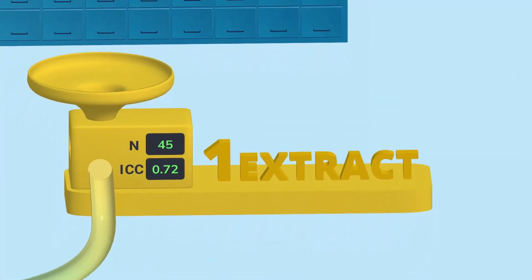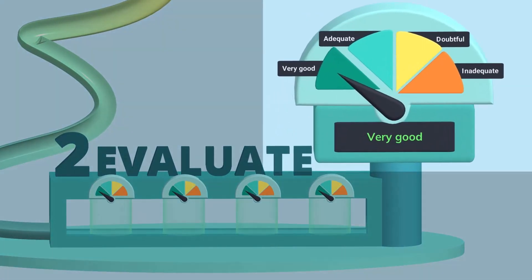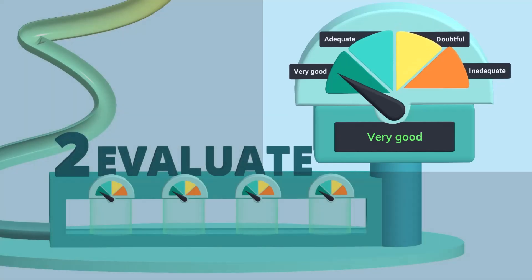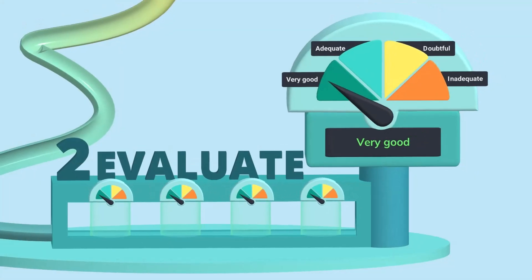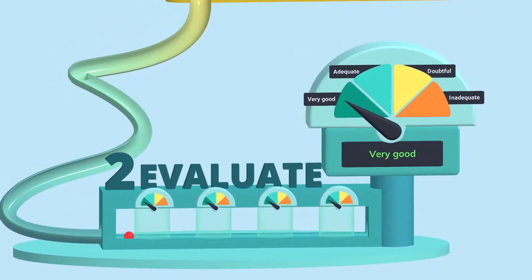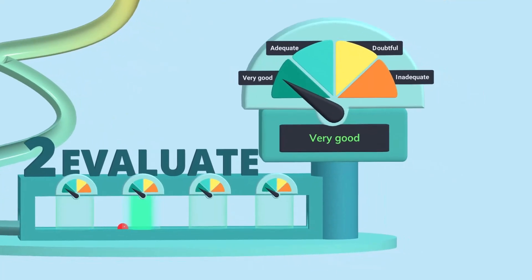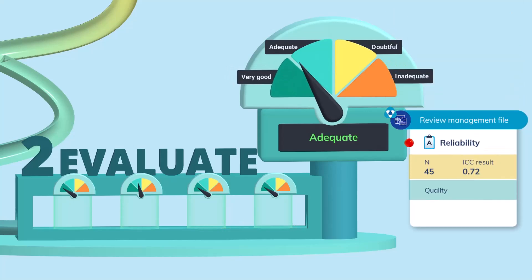At the second station, you evaluate the methodological quality of each study. There are 4 ratings: very good, adequate, doubtful, and inadequate. You use the standards of the COSMIN Risk of Bias checklist to rate the study. You check the study for each quality standard for reliability: the time interval was appropriate; we assume the patients were stable on the construct, but no evidence was provided; the test conditions were similar; the appropriate ICC formula was calculated. At the end, you give it a final rating based on the worst score of each standard.